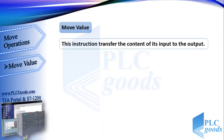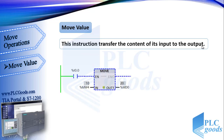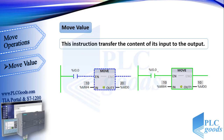The first instruction is move value. This instruction transfers the content of its input to the output. This is its ladder symbol. Now the value of MW4 is 10 and MD0 is 20. When I activate this instruction with this contact, the value at its input will copy to the output.